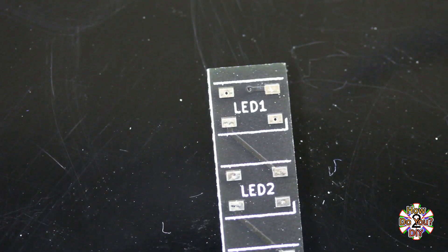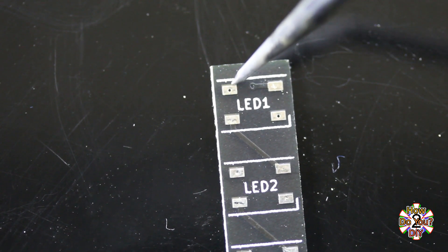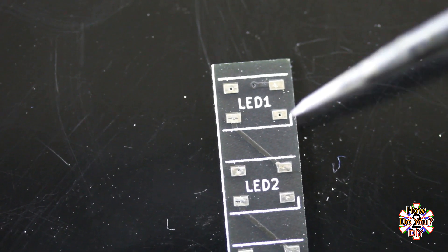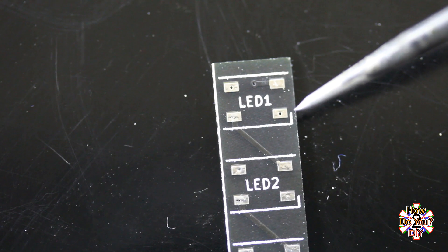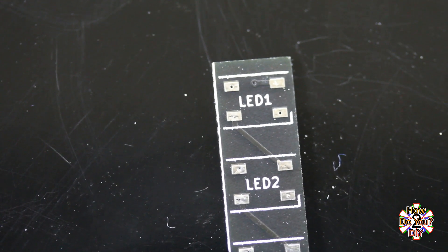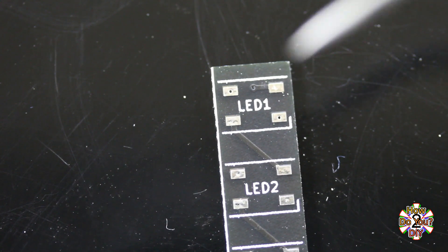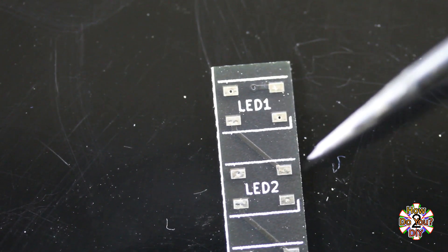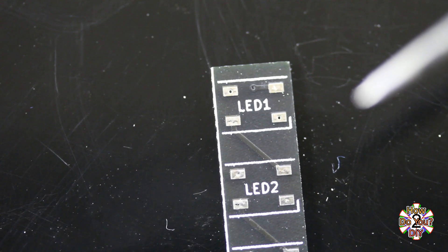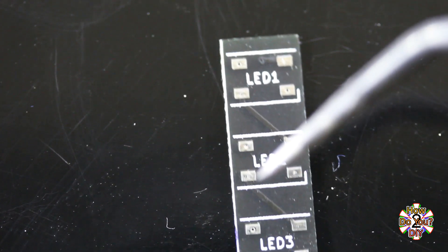The two power connections of each LED has vias going through to the back side of the board. The power traces are all on the back. The LED's data input and output traces stay mainly on the front side of the board. The output of one LED goes to the input of the next one.